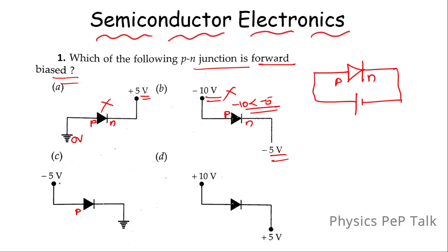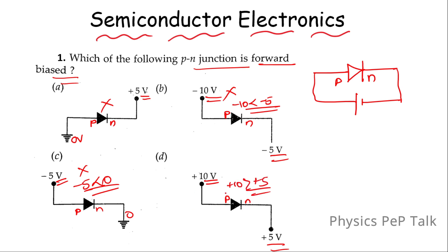P is connected to minus 5 and N is connected to 0. Minus 5 is less than 0, so this is also reverse biased. Now, P is connected to plus 10 volts and N is connected to plus 5 volts. Plus 10 is greater than plus 5 volts, so option D is the one where the P-N junction is forward biased.